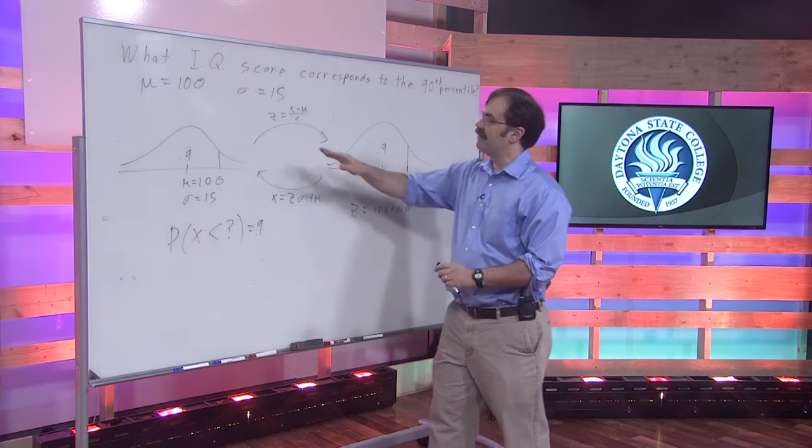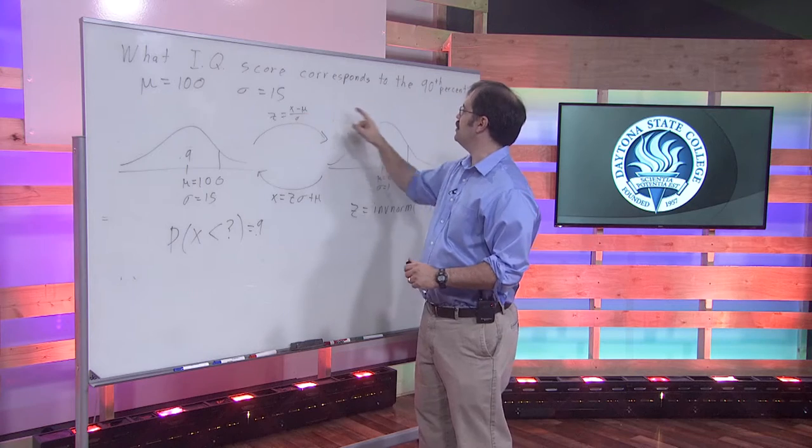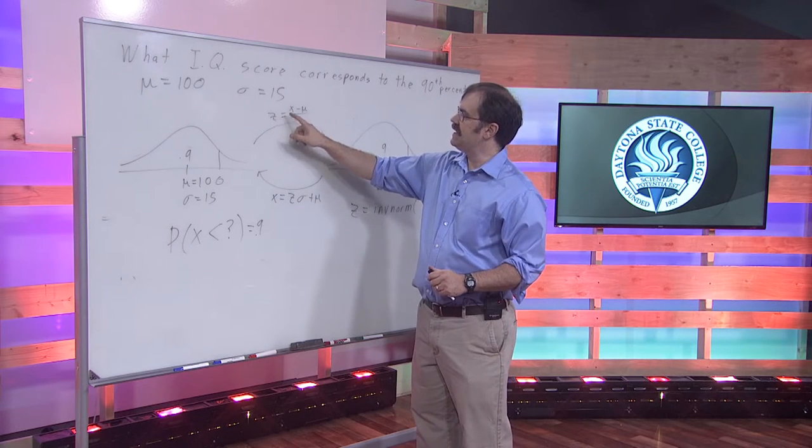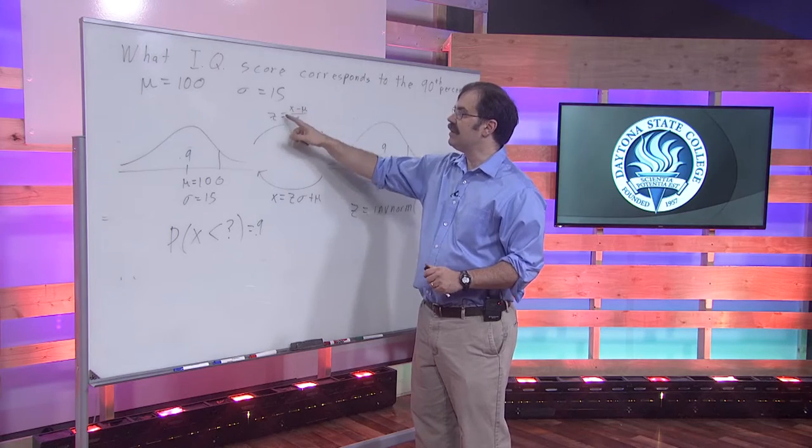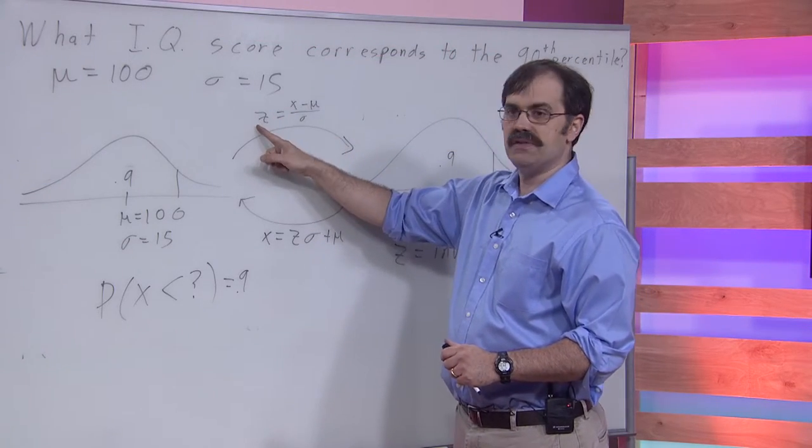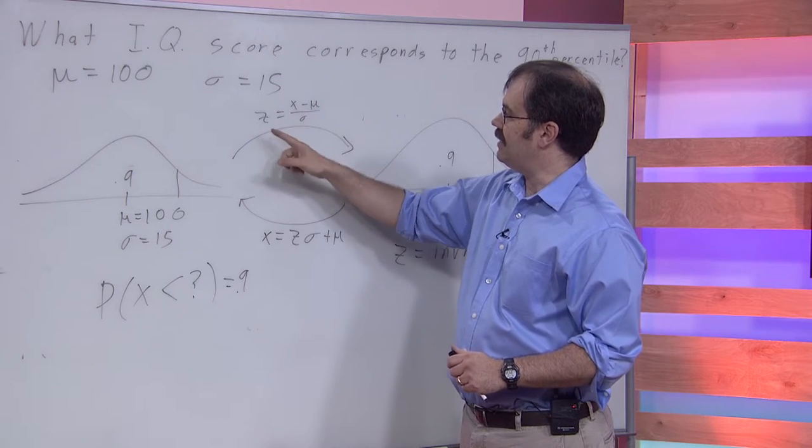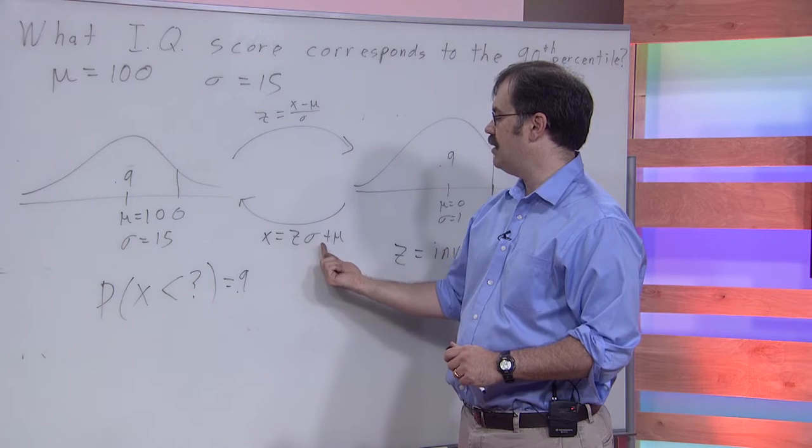And the formula that we used for converting our x-values to z-scores was z equals x minus mu over sigma. But if you just do a little bit of algebra on this, you would see by multiplying both sides by sigma, then adding mu to both sides, that x is really the same as z sigma plus mu.